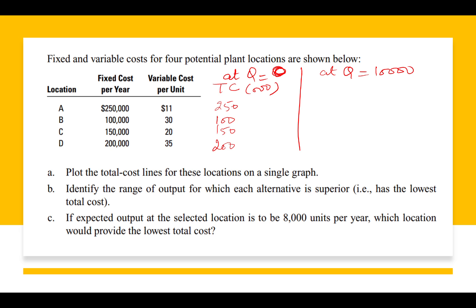Many students ask why 10,000 specifically. The answer is it depends on the values given in the table. Fixed cost is given in lakhs — it is 2,50,000 — and the per unit variable cost is 11. You should multiply the per unit cost by a quantity approximately equal to the fixed cost. Multiplying by 10,000 gives 1,10,000, which is close to 2,50,000. You can take 5,000, 12,000, or 15,000 as well, but 10,000 makes the calculation easy.